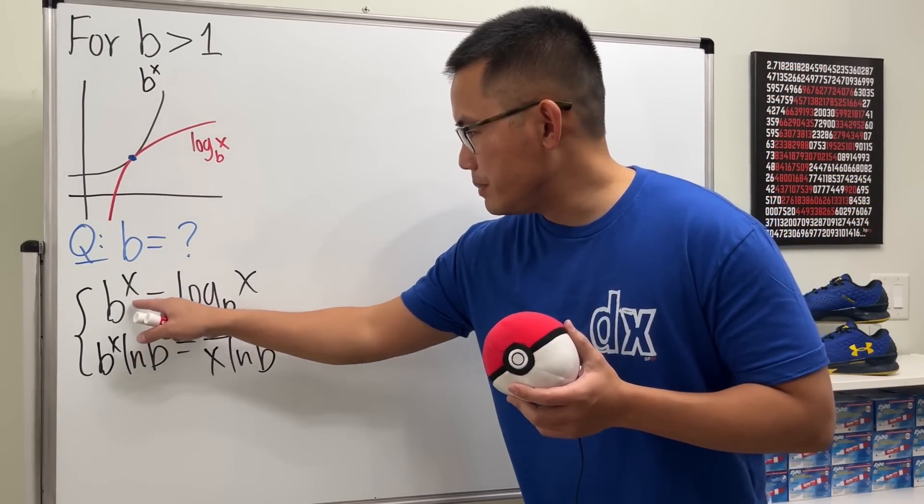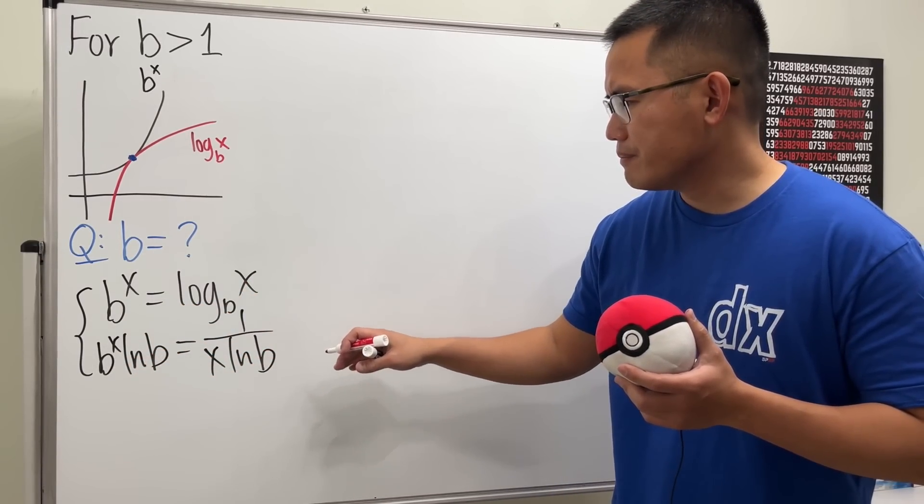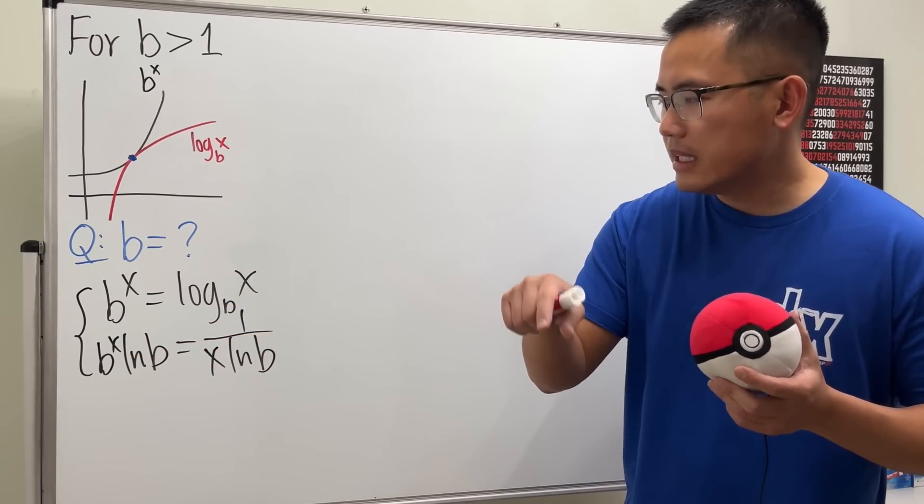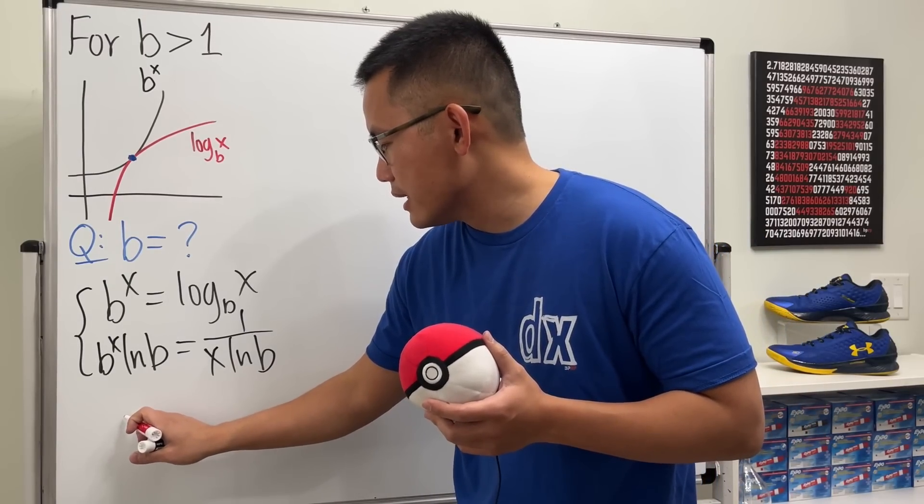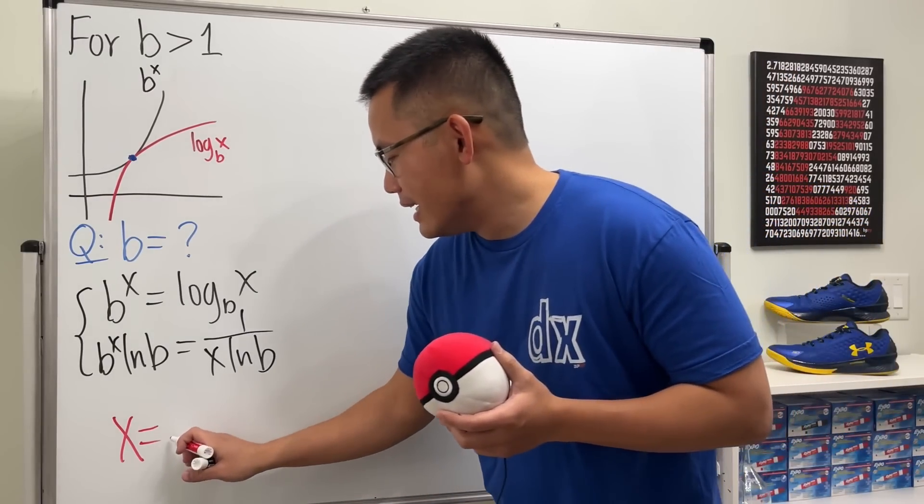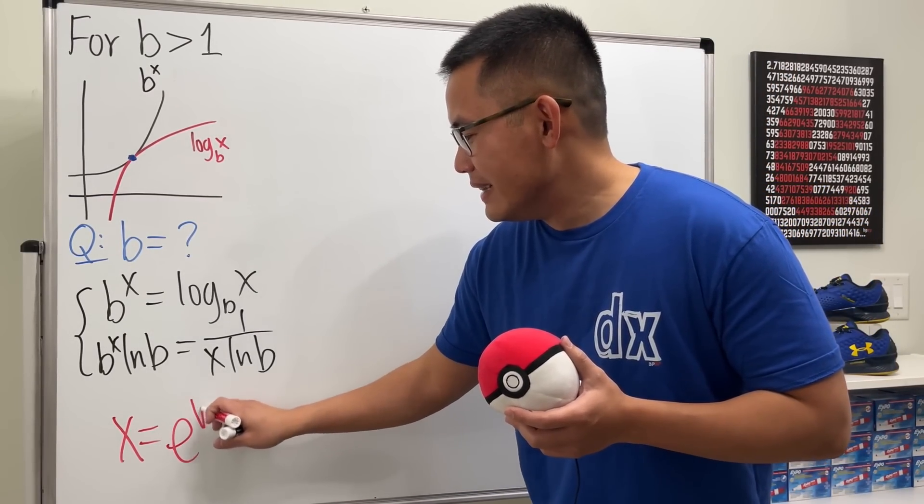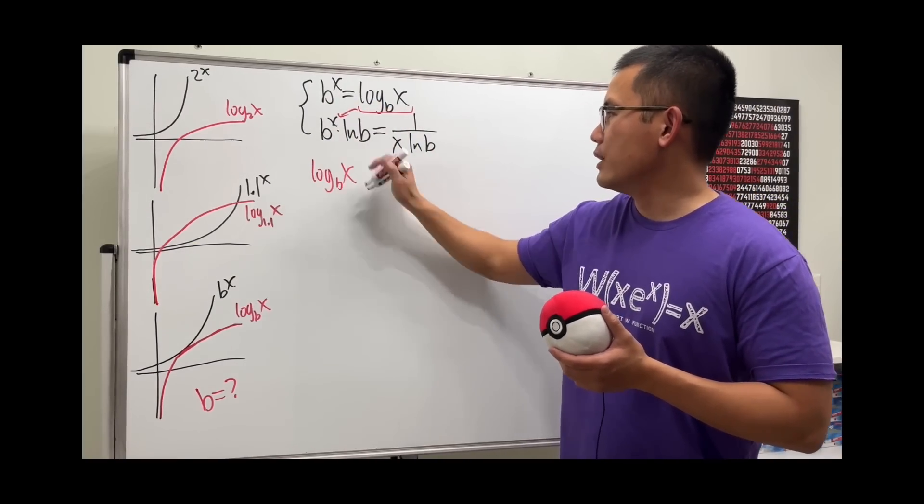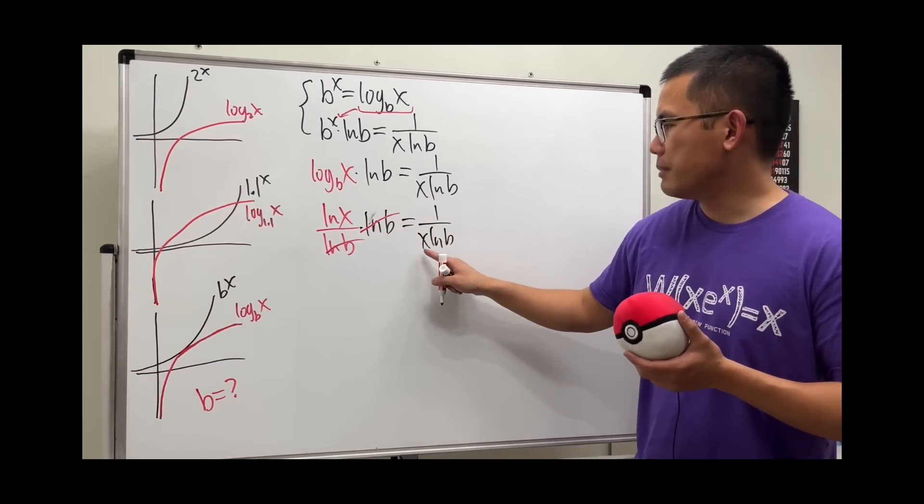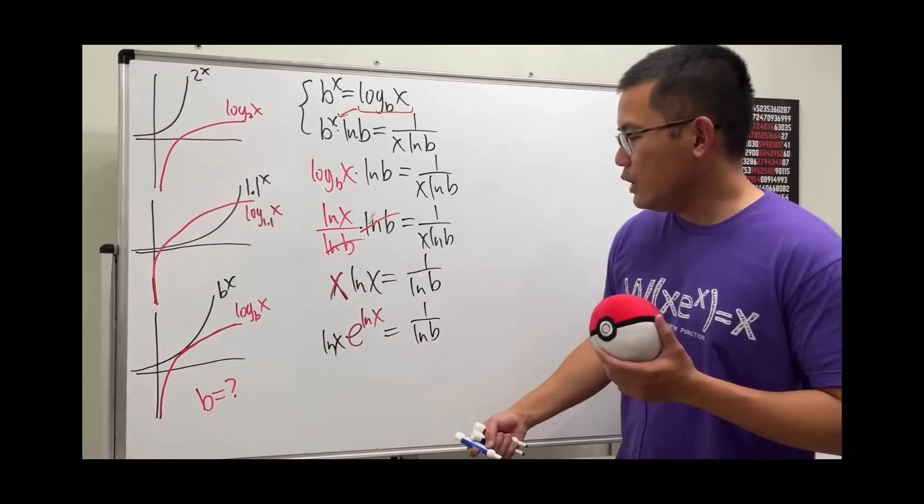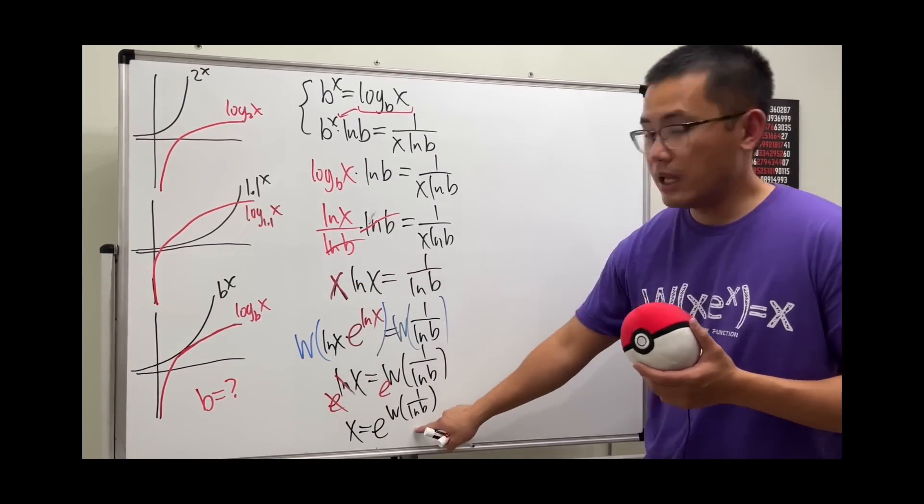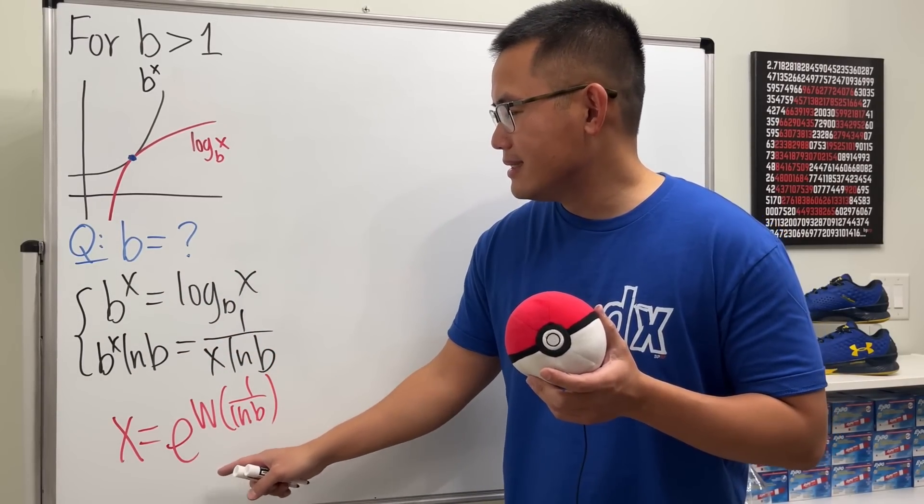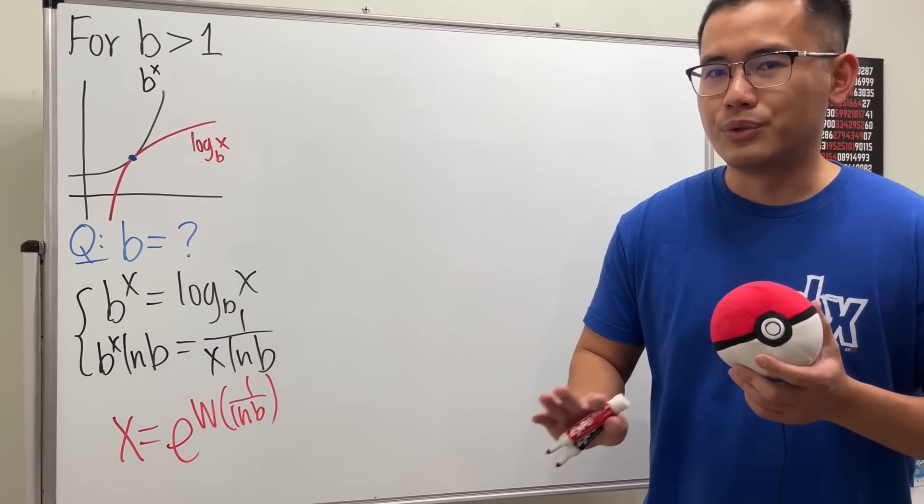Should we put this right there and try? If you put this there you can solve for x in terms of b, and I'll tell you this will give us x equals e to the Lambert W function of 1/ln(b). I'm not kidding. You can put this back and try to solve for b, but let me tell you: don't do this because it will be horrendous.